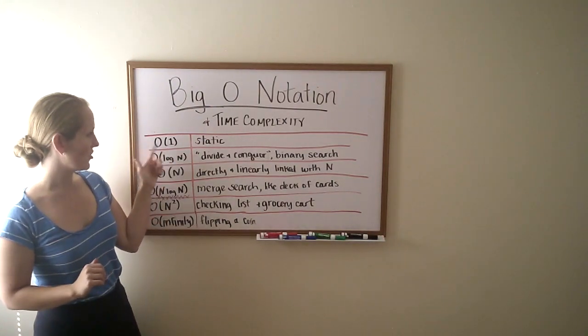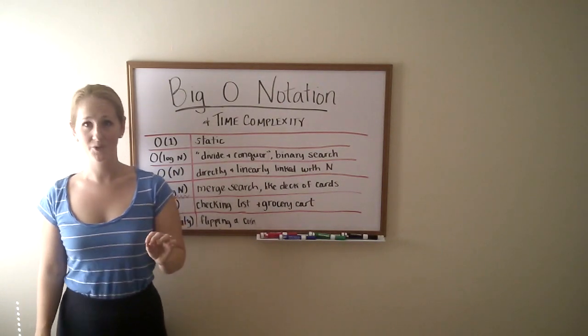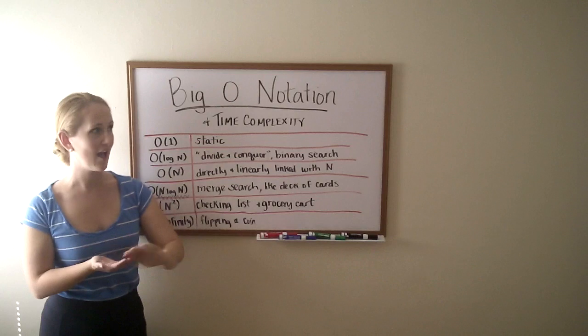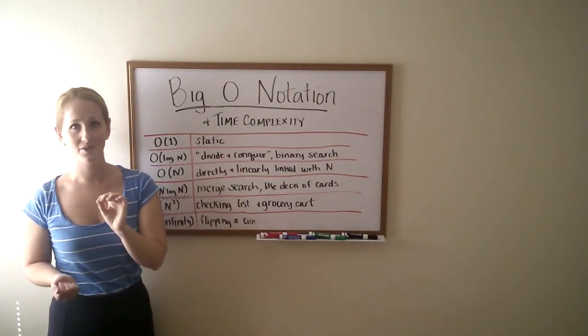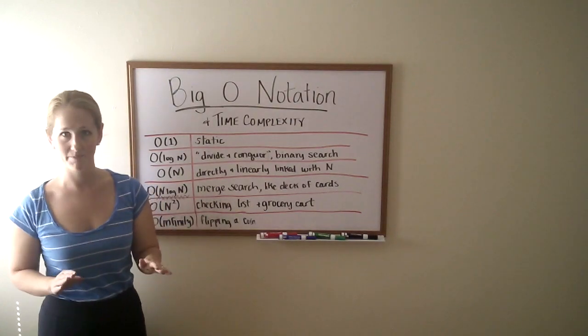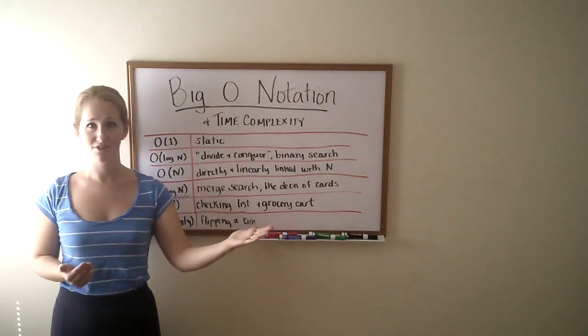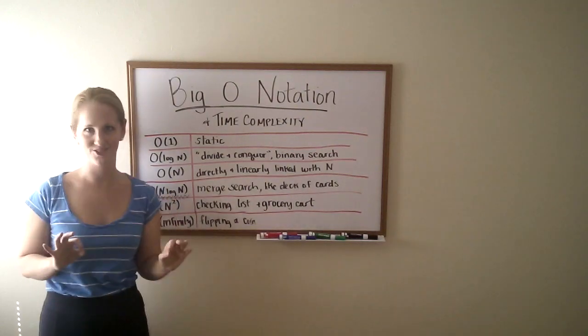O with one being n is an example of a static amount of time that an algorithm would take. So if it was a simple algorithm, it doesn't matter how many entries are in an array, the amount of time that it's going to take to execute that function is going to be the same every time. That's pretty much ideal. It really depends on your problem you're trying to solve or if that's possible or not, but that's a great and very efficient way to do things.